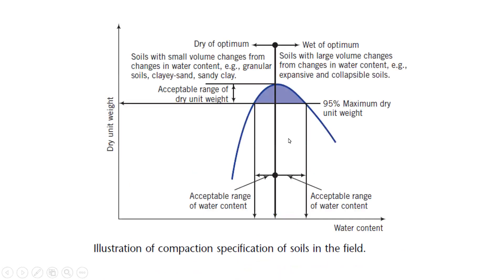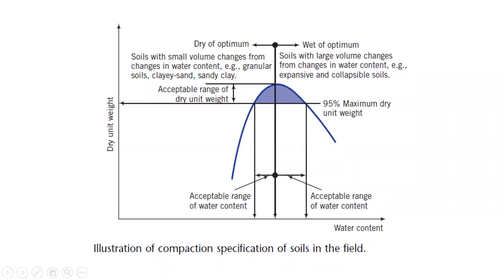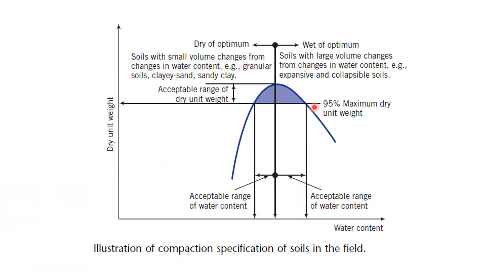The compaction curve was discussed in the last lecture, but today I would like to revisit this graph. This compaction curve is drawn in the laboratory using sets of water content and dry density readings. This peak point is called 100% compaction, or 100% maximum dry density. Normally, the range from 95% to 100% is considered the acceptable range.